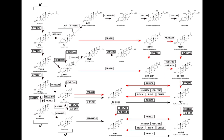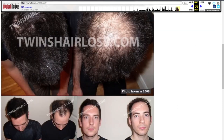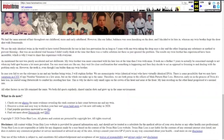Drugs like finasteride and dutasteride are 5-alpha reductase inhibitors. If they effectively inhibit 5-alpha reductase activity, they would theoretically also impact the conversion process in the backdoor pathways — namely the 17-OHP and P4 pathways. So if those backdoor pathways rely on 5-alpha reduction as their initial steps, and 5-alpha reductase is being inhibited, then this would logically reduce the biosynthesis of DHT through these backdoor pathways. This counters the idea of reflex hyperandrogenicity, where the body purportedly compensates for the reduction of DHT by upregulating other androgenic pathways.